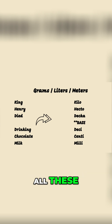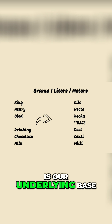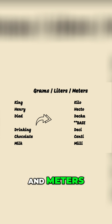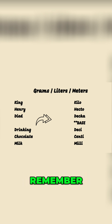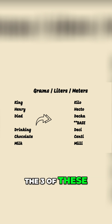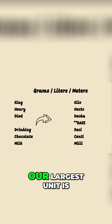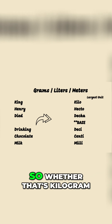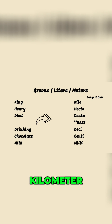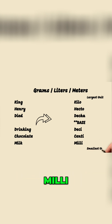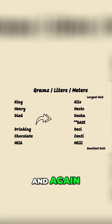In the middle of all these is our underlying base, which is where we put our grams, liters, and meters. Now remember, this doesn't work for all conversions — it only works for these three. Looking at our units of measure, our largest unit is kilo — whether that's kilogram, kilometer, or kiloliter. The smallest unit is at the bottom: milli — milliliter, milligram.